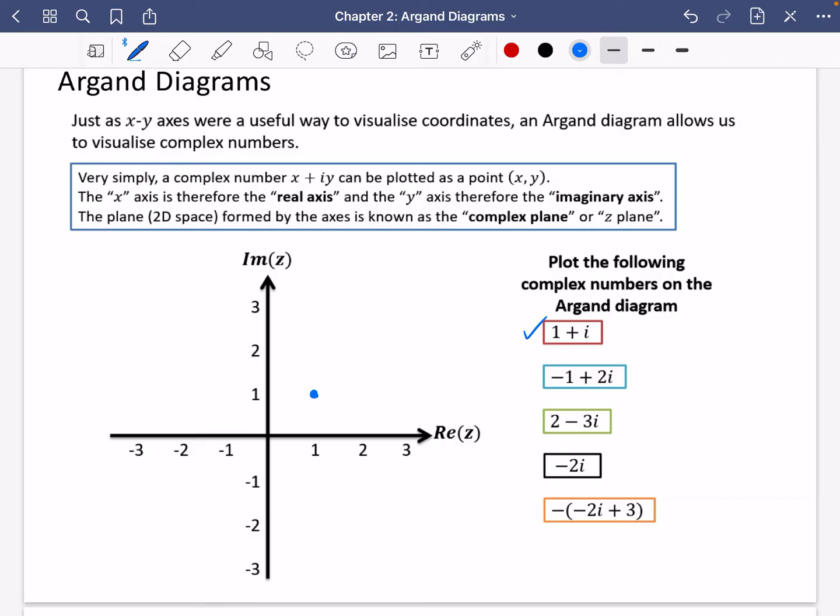And then we've got -1 plus 2i. So we're going to go to -1 on the real and 2 on the imaginary. That's what that complex number looks like. Sometimes you can draw them with a line so that you can actually see that property as well. If you do them just as a point, that's fine too. We've then got 2 minus 3i. It's going to come down here. That's 2 across and 3 down. You can draw it to the origin if you want to.